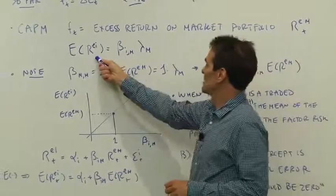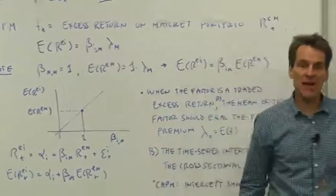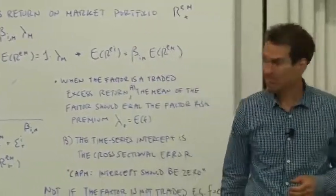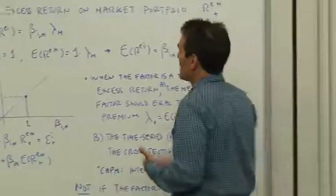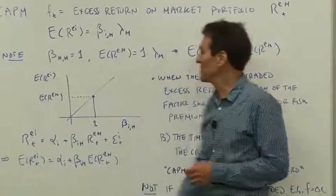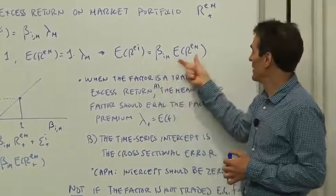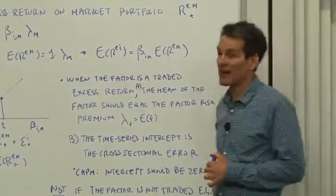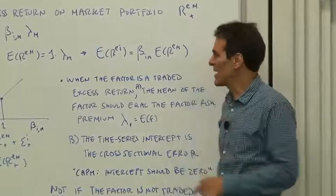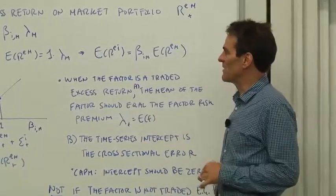Its statement is expected excess returns are linear in betas on the market portfolio. A little digression: you may not have seen it in that form before. If you've seen the CAPM before, you've seen something like expected return is proportional to beta with the market expected return on the right-hand side. We have to connect those two just to make it clear.